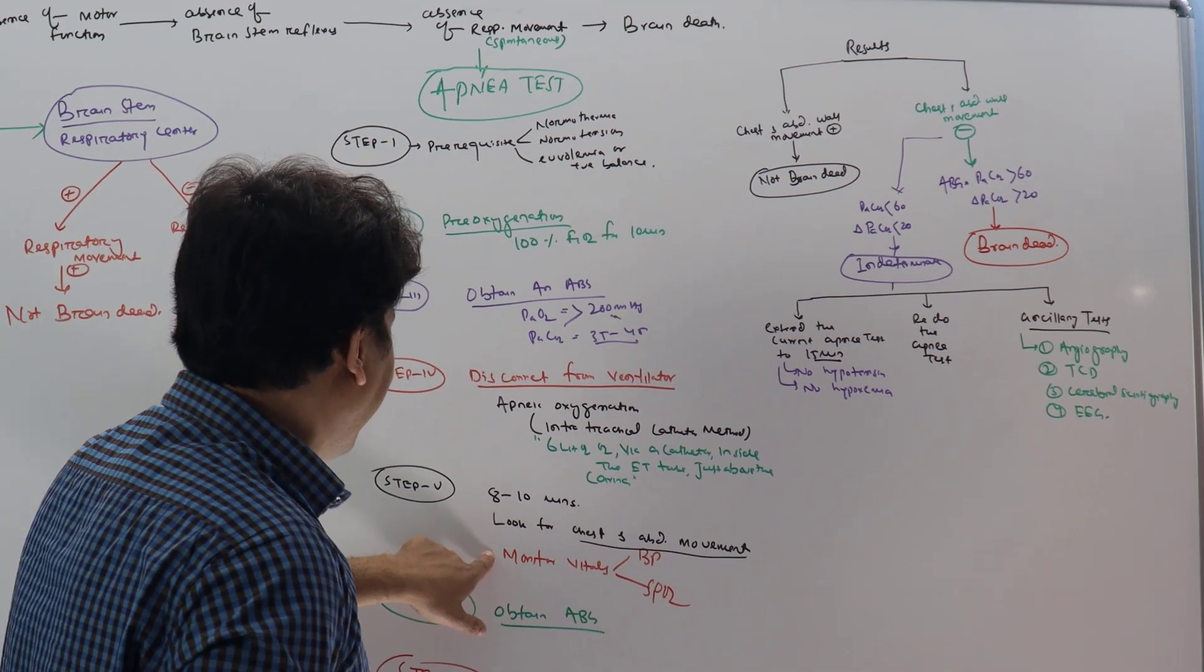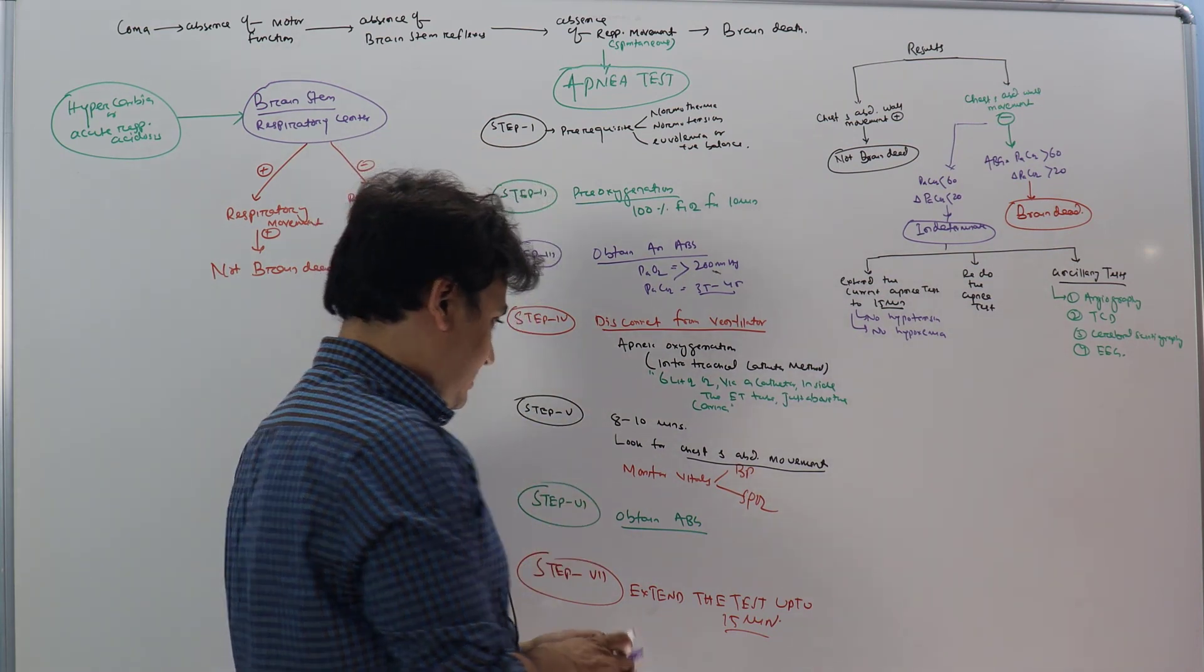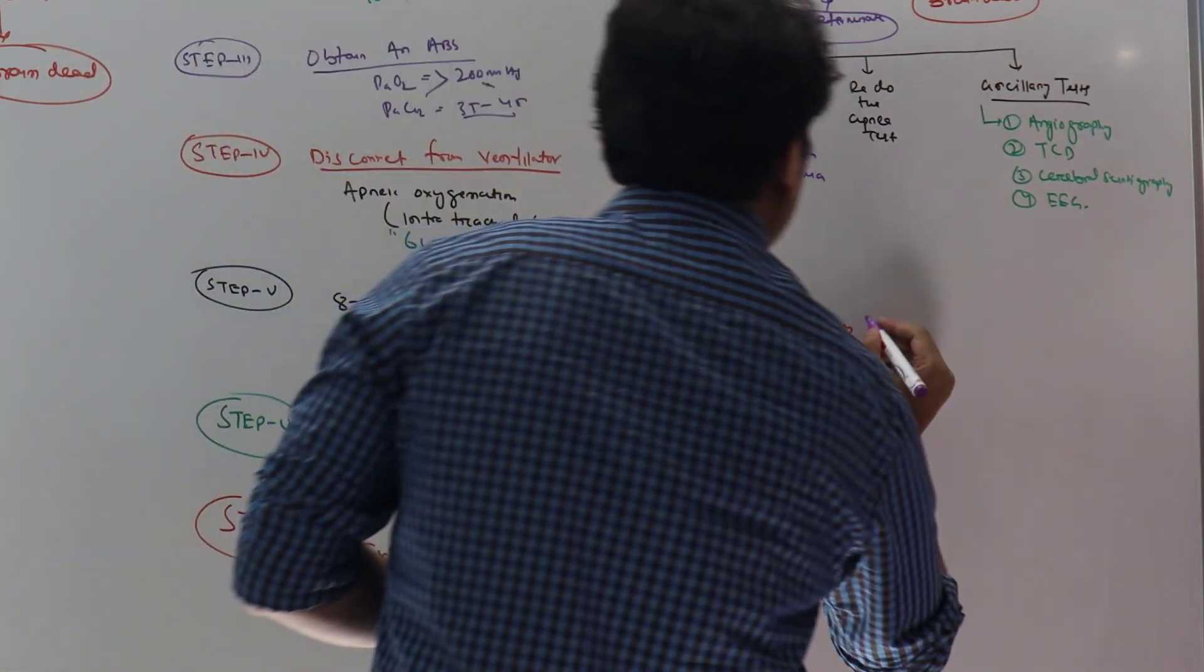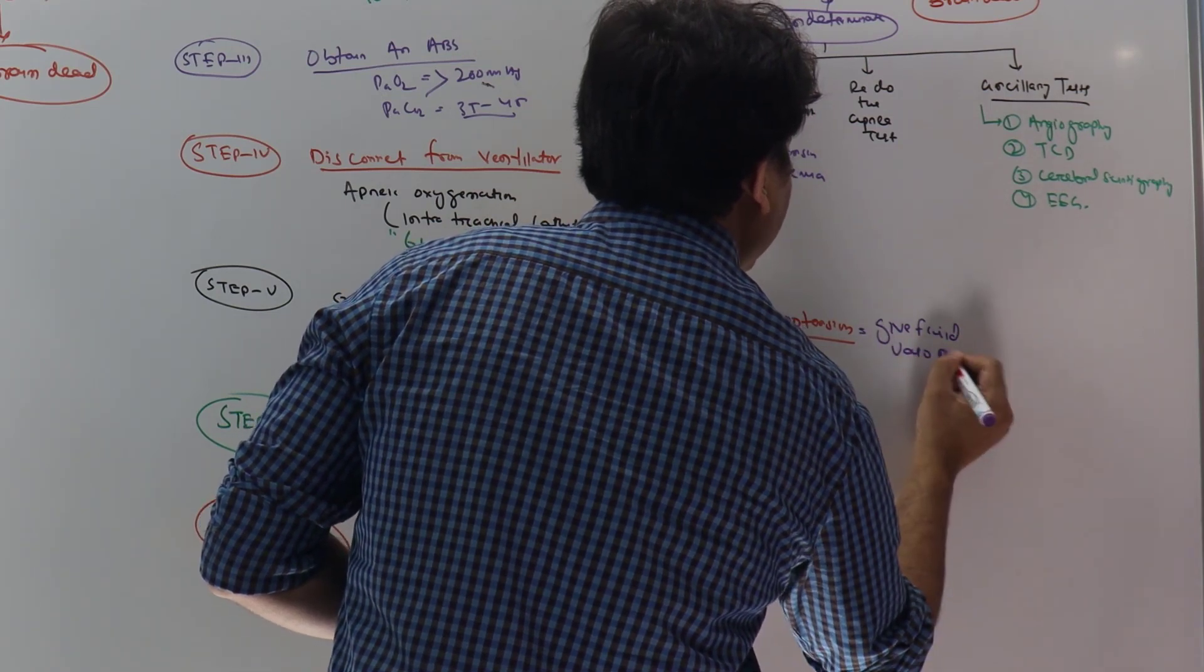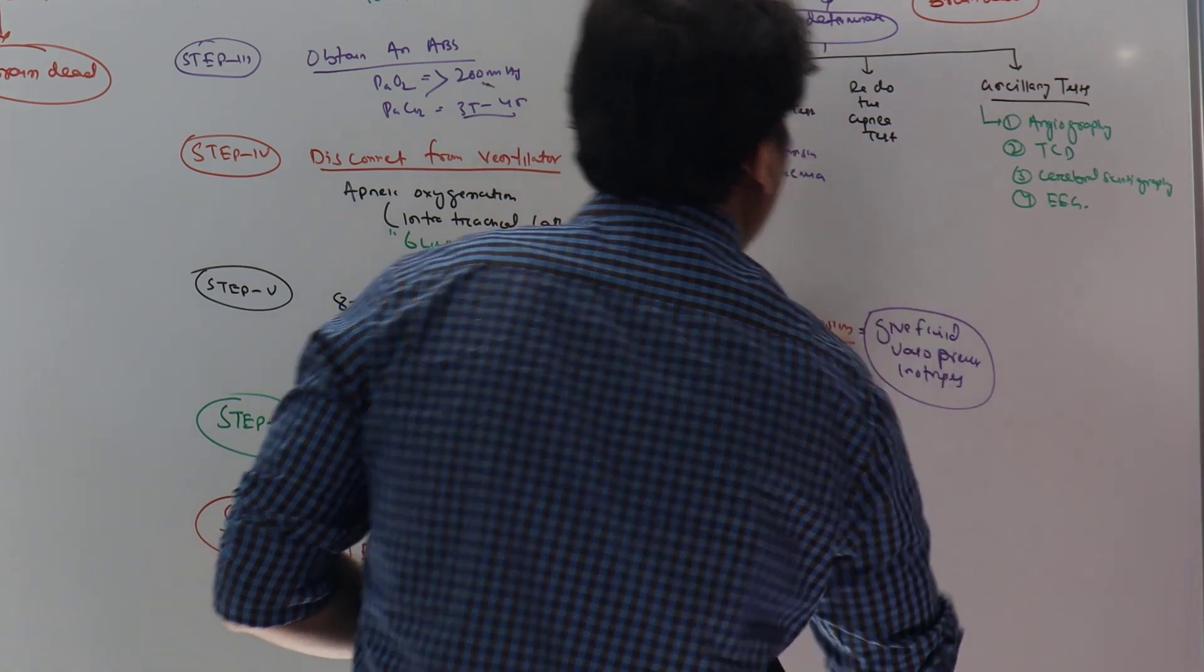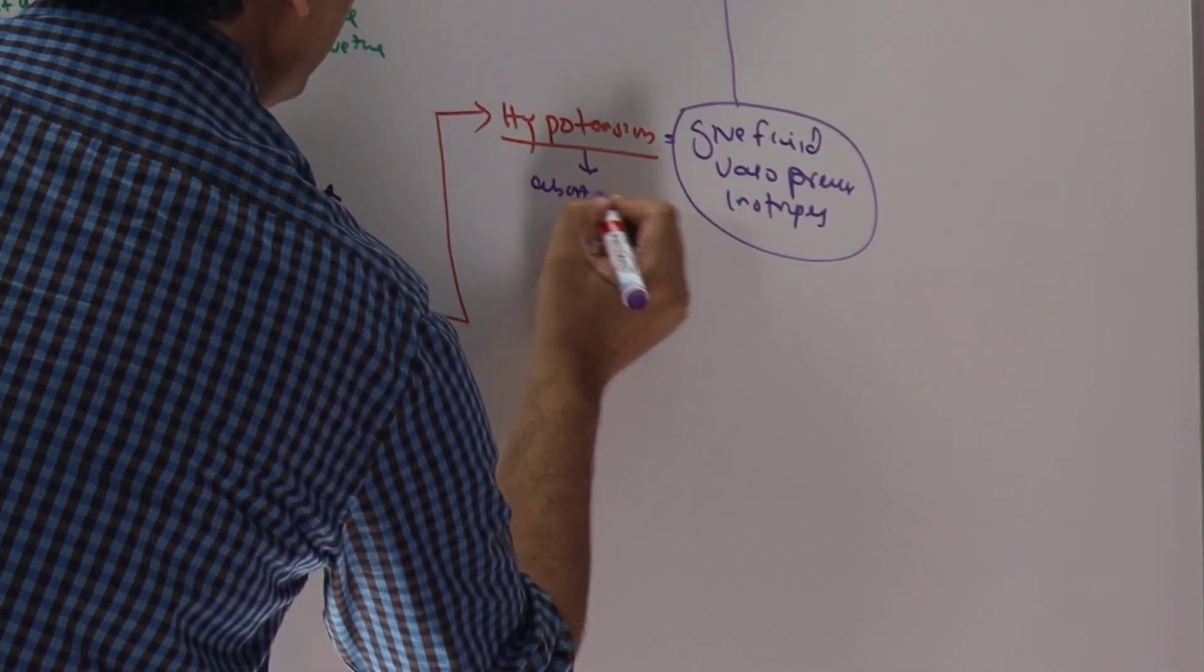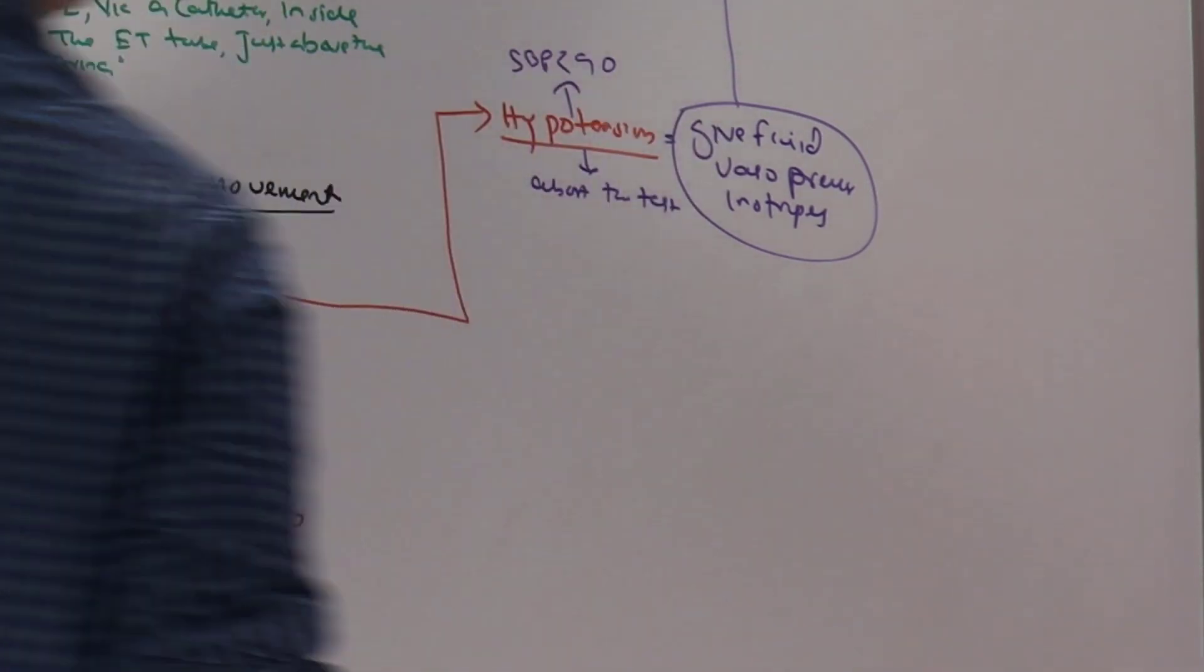While we are monitoring the vitals in the 10 minutes, we can face two very critical complications. One will be hypotension. If there is hypotension, we have to fix it. How to fix it? Give fluid or vasopressor or inotropes, and fix it and redo the apnea test. Because here you have to abort the test if there is hypotension. The definition of hypotension is SBP less than 90.